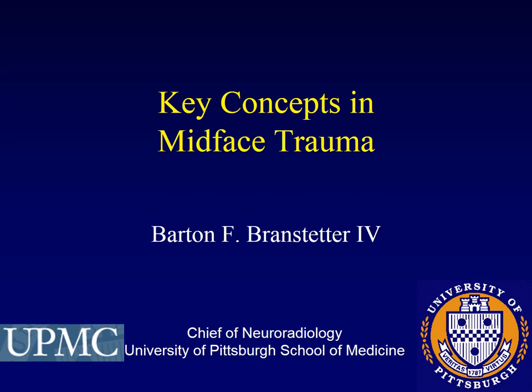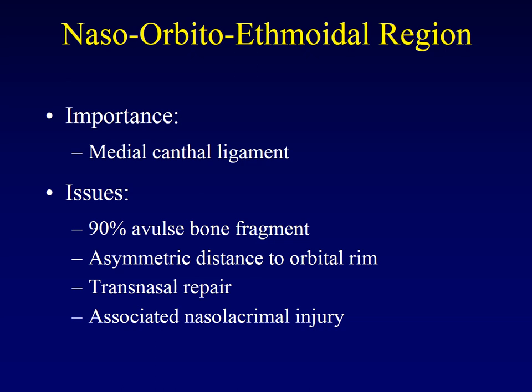This is the fourth and final component of the lecture on facial fractures. Now let's talk about naso-orbital ethmoidal region fractures. The naso-orbital ethmoidal region is right where the ethmoid air cells, the nasolacrimal sac, and the rim of the orbit all come together. This is such a critical and subtle fracture that it warrants its own category, and I bring it up separately to encourage you to look specifically for it every time you see facial trauma.